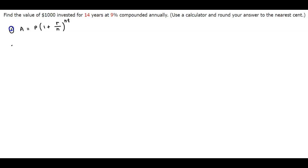So let's write down the given information. We're given the fact that the principal here is $1,000. We know that t is for 14, so that's 14 years. We know the rate is given as 9%, but we can convert that to a decimal of 0.09. And we know that it's compounded annually, so therefore n is going to equal 1, and we're looking for the amount.